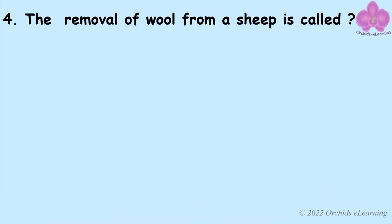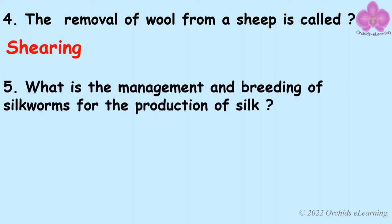The removal of wool from a sheep is called shearing. What is the management and breeding of silkworms for the production of silk called? It is called sericulture.